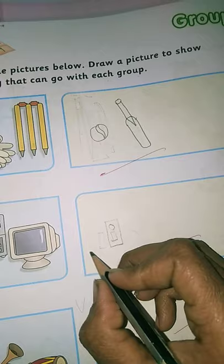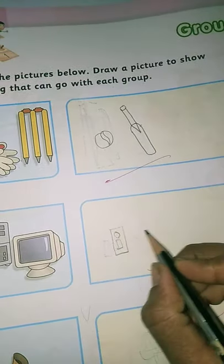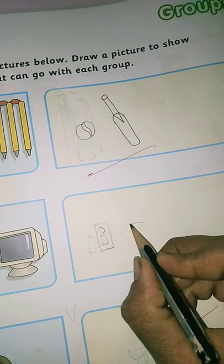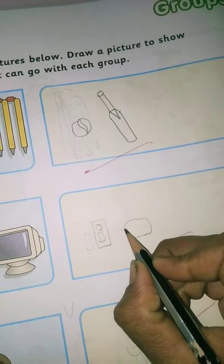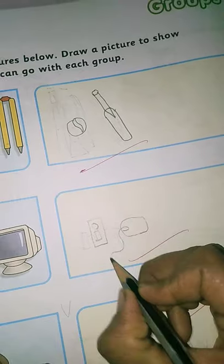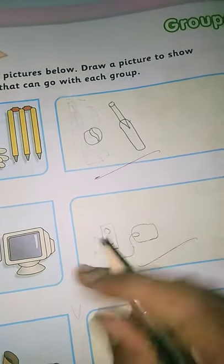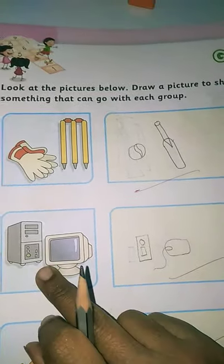You can draw accordingly as you wish. Or you can draw a picture of mouse also. Abhi yaha pe hum ek mouse bhi dikha sakte hai. Think that this is a mouse. Aur ye uski wiring. This way we can draw according to the related group.